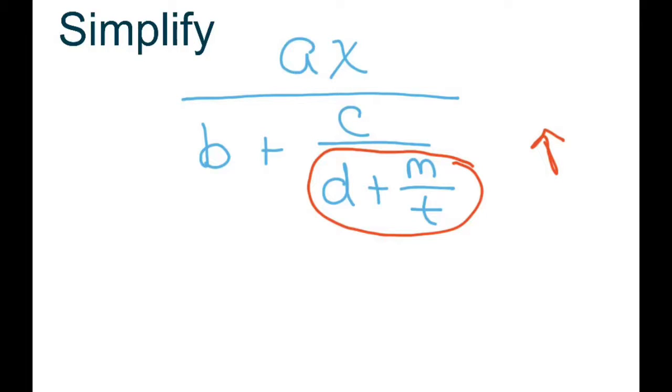So our common denominator for this piece right here is T. To rewrite that, that's going to be DT plus M divided by T. Or if you want, you could put T under each piece if that helps. That way you know that these are equivalent, but we'd rather write it as DT plus M over T.